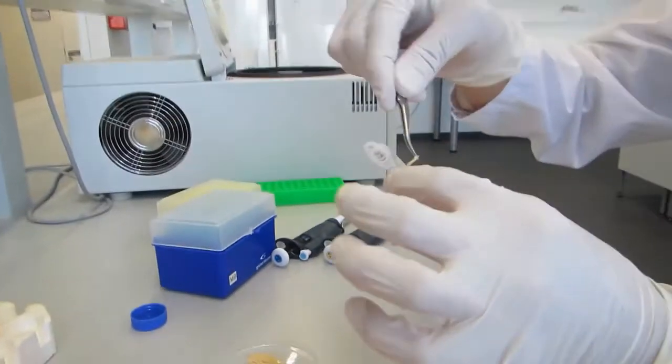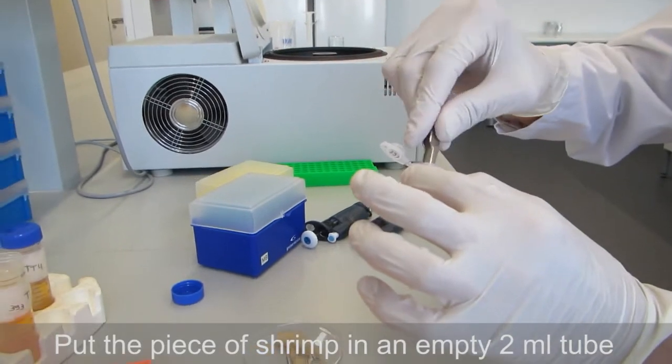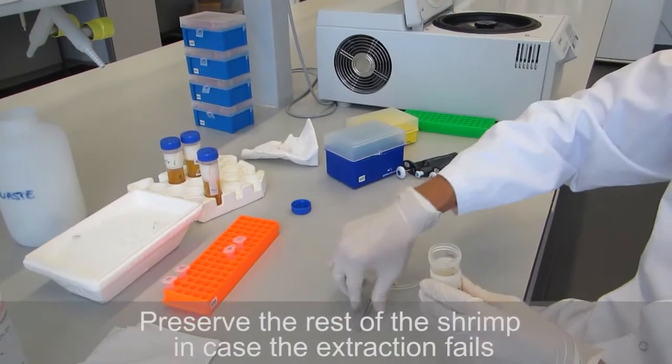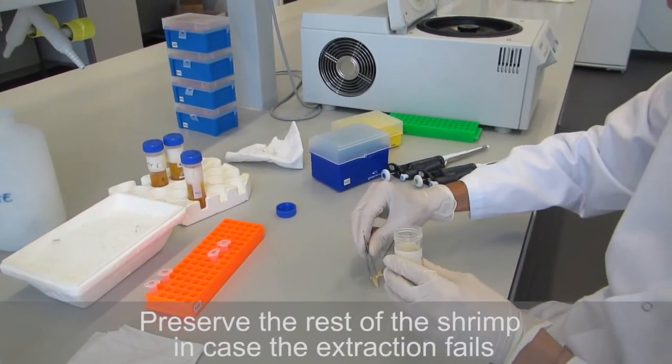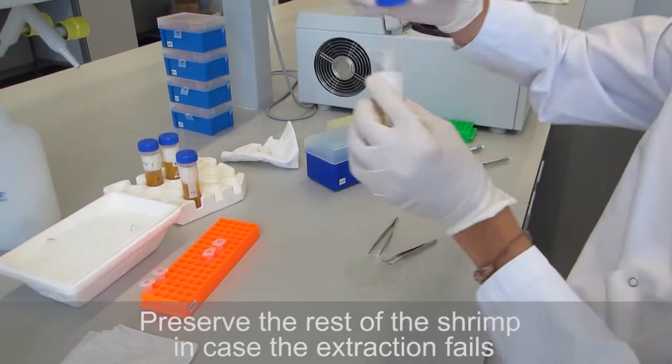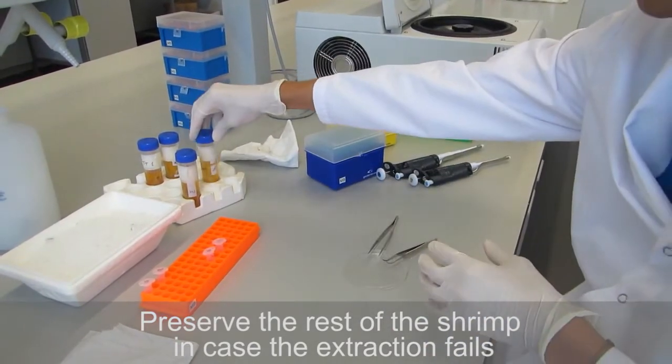So we put it in an empty tube. And the rest of the shrimp we keep in our ethanol for if this extraction fails we still have enough material to do a second one or a third one even.